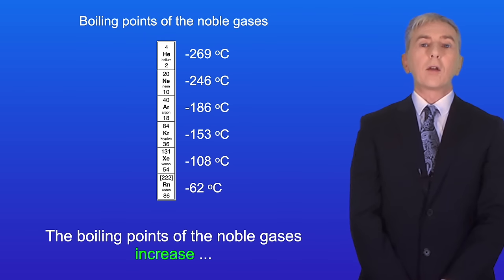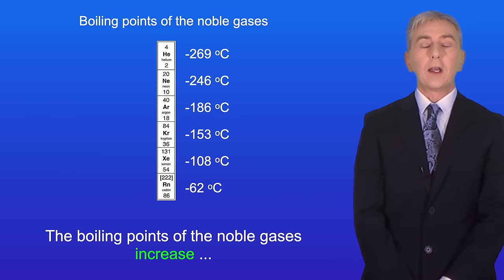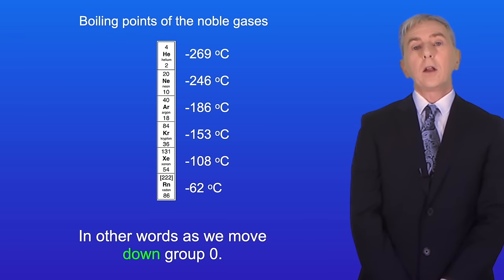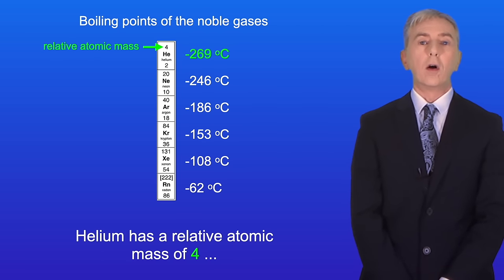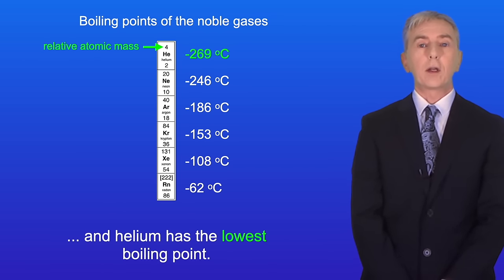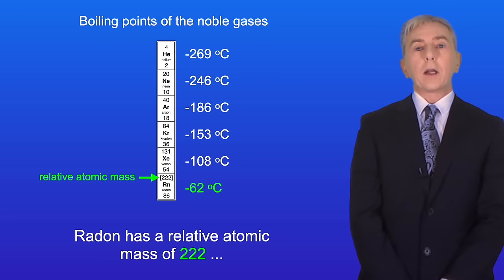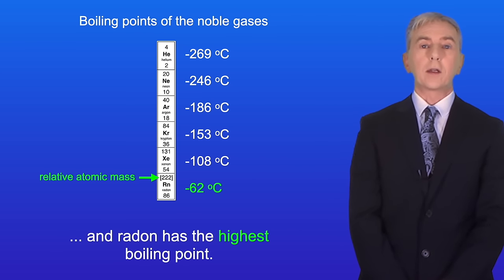Now the boiling points of the noble gases increase as the relative atomic mass increases. In other words as we move down group zero. So helium has a relative atomic mass of four and helium has the lowest boiling point. Radon has a relative atomic mass of 222 and radon has the highest boiling point.